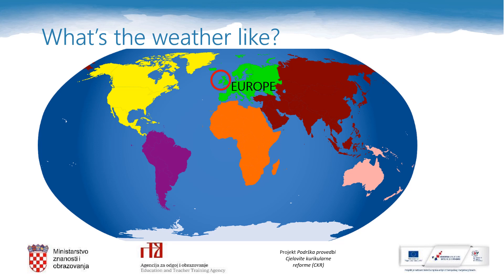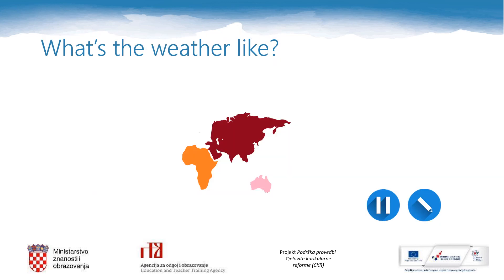Now we know something about the weather in Europe. What about other continents? What is the name of the continent that is coloured red? Asia. The orange one is Africa. And the pink one is Australia.